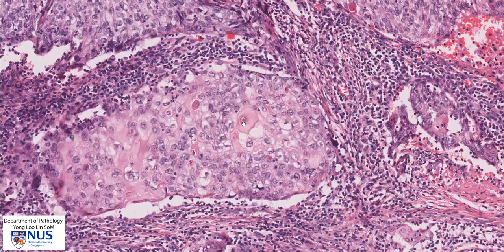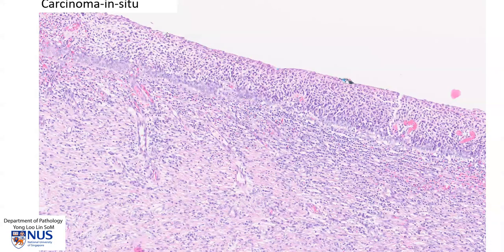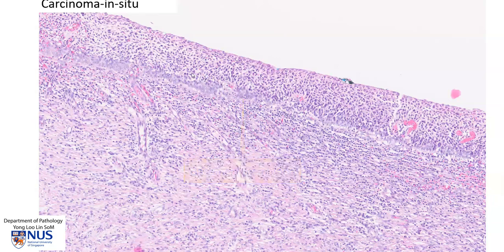In some areas there is a focal suggestion of individual cell keratinization. I want to do a very quick direct comparison with a case of squamous cell carcinoma in situ. This is a case where there is neoplastic change throughout the full thickness of the epithelium; however, the neoplastic cells are still confined by the basement membrane and we do not see any invasive tongues going into the underlying cervical stroma. This has a much better prognosis if completely removed, compared to invasive squamous cell carcinoma, which has the potential to metastasize.